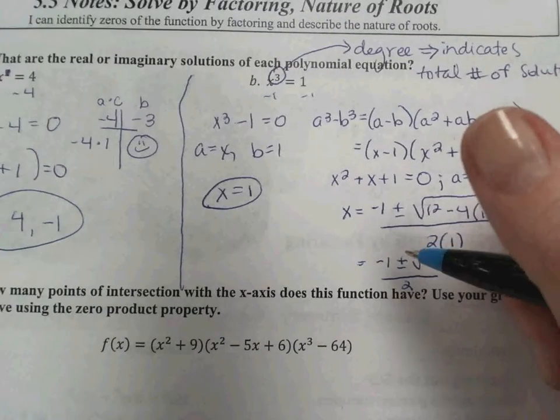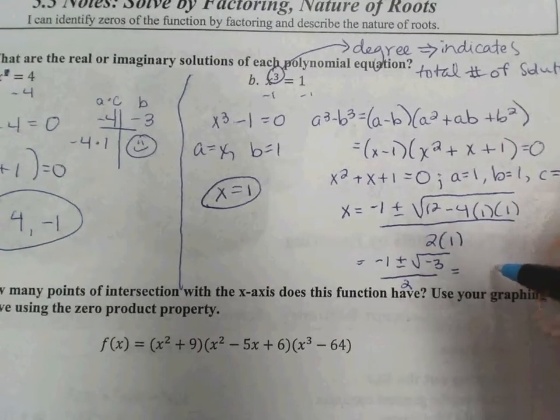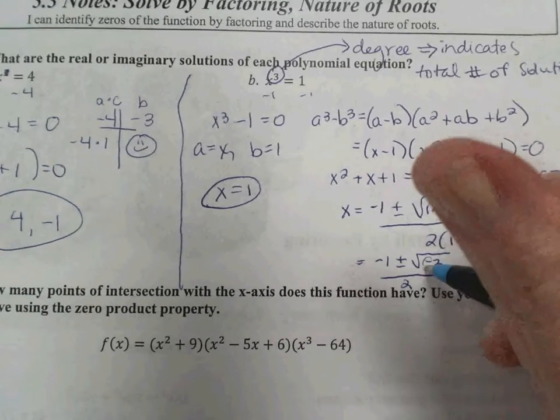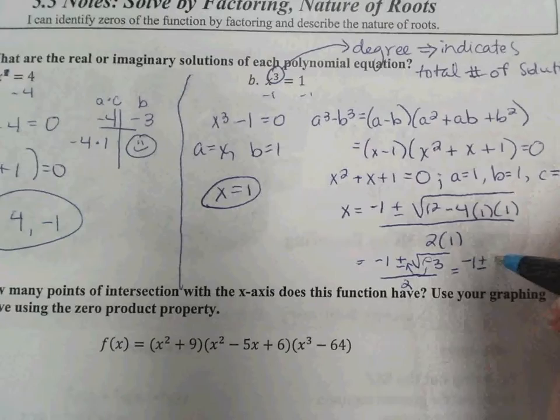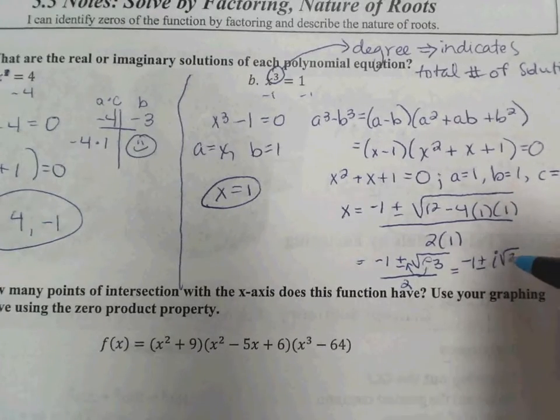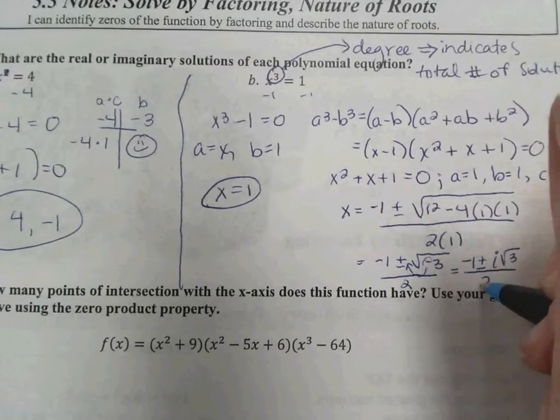You can flip to the back. So I have a negative under a square root. We all know what that means. It comes out as an i. So we have negative 1 plus or minus i radical 3 over 2.